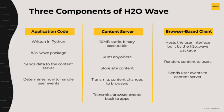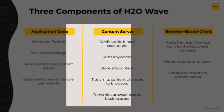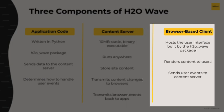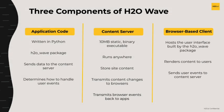There are three components of H2O WAVE. First is the application code, then the content server, and finally the browser-based client. The application code is what we will be writing together later on to build a WAVE app. It is usually written in Python, and we will be using the H2O WAVE package. This application code determines how to handle user events or app logic and sends information to the content server.